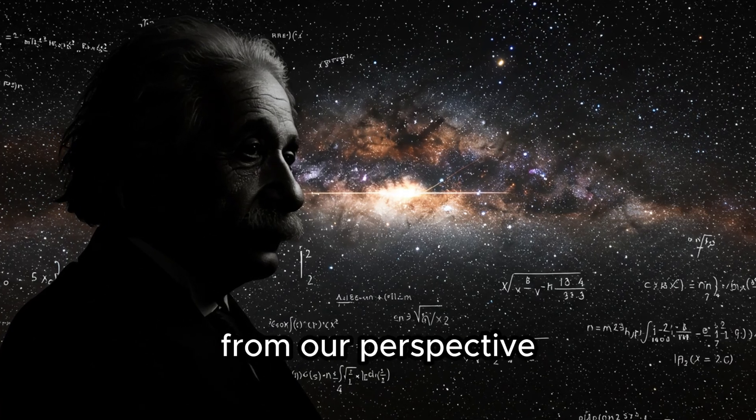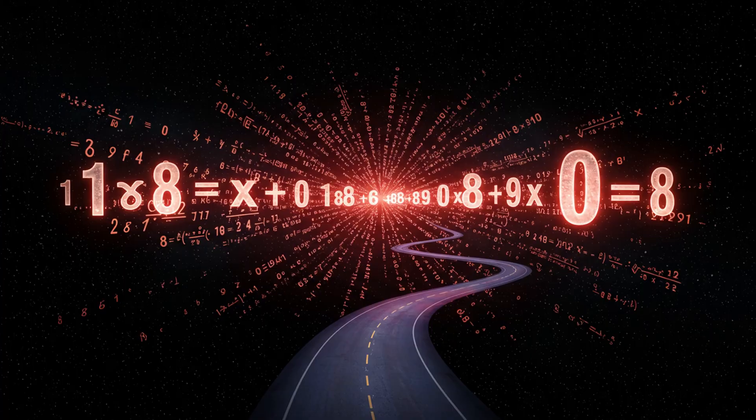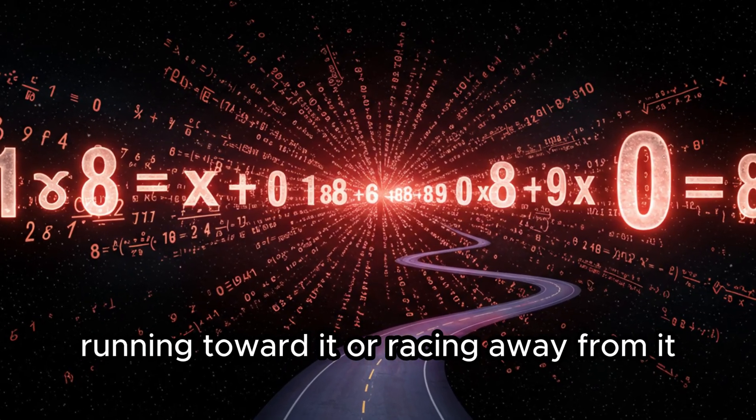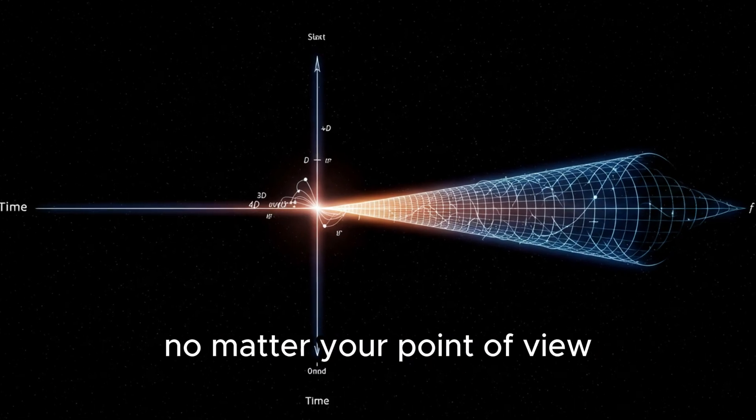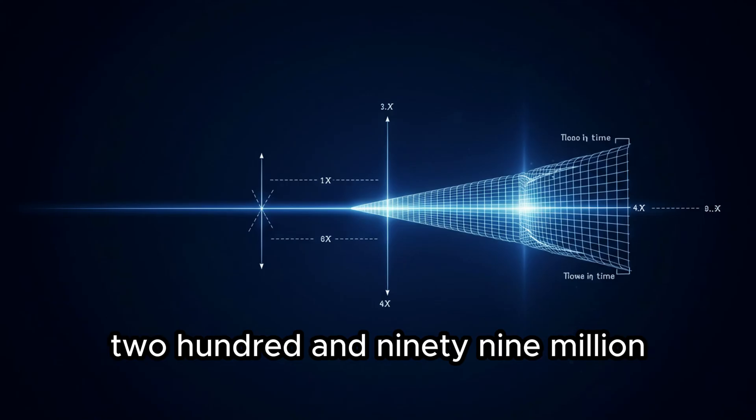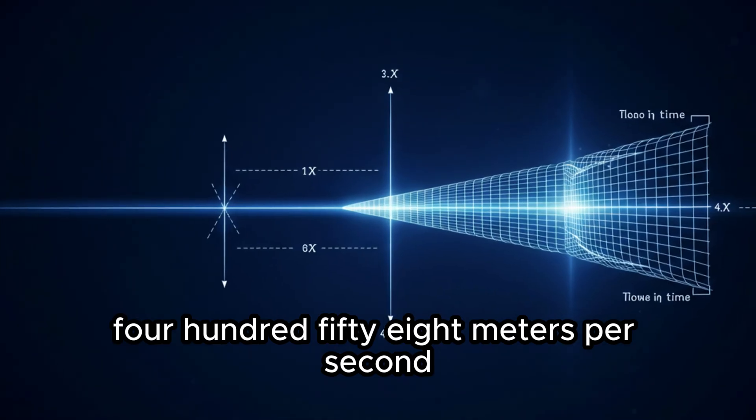From our perspective, light always moves at the same speed. It doesn't matter if you're standing still, running toward it, or racing away from it. No matter your point of view, light insists on traveling at exactly 299,792,458 meters per second.